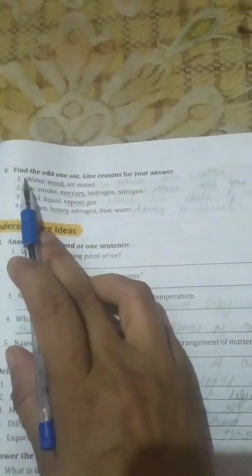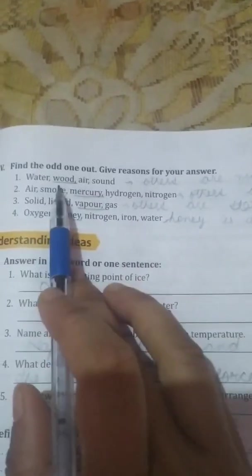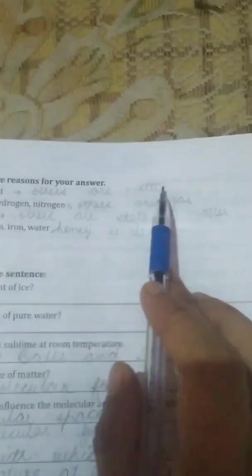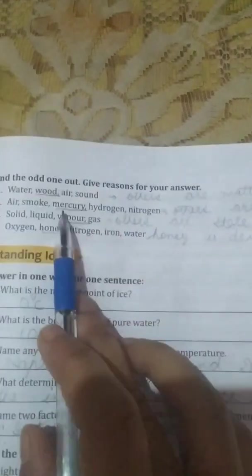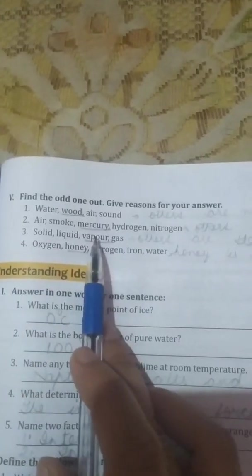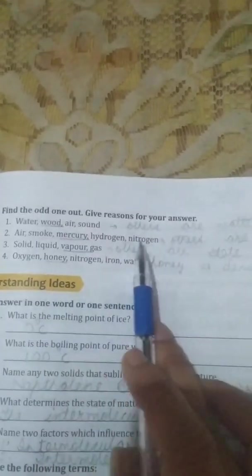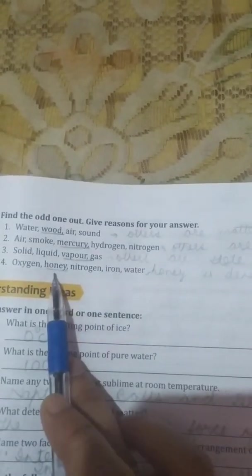Fifth is find the odd one out. Give reason for your answer. First is water, wood, air, and sound. So wood is the odd one, others are matter because they occupy space and they have mass. Second, air, smoke, mercury, hydrogen, nitrogen. So mercury is the odd one because others are gas or in the gaseous state. Third, solid, liquid, vapor, and gas. So vapor is odd one, others are state of matter. Fourth, oxygen, honey, nitrogen, iron, and water. So honey is odd one because honey is denser than them.